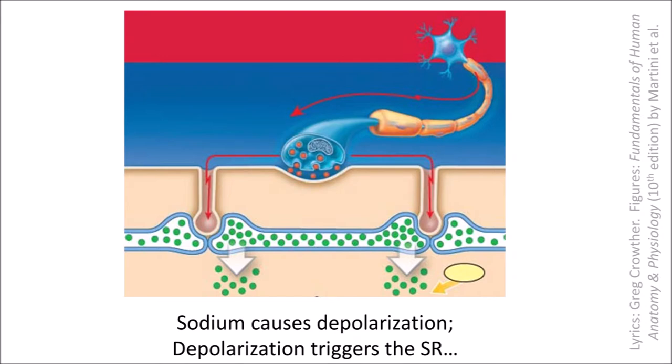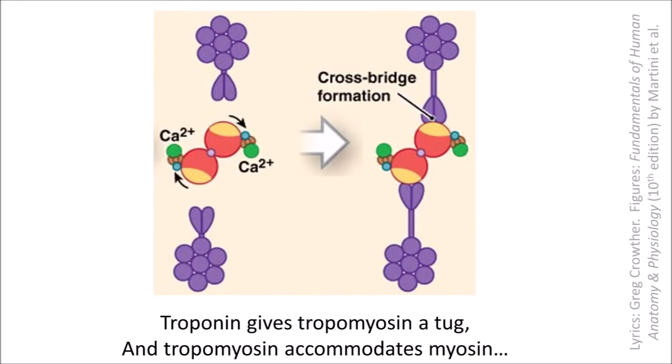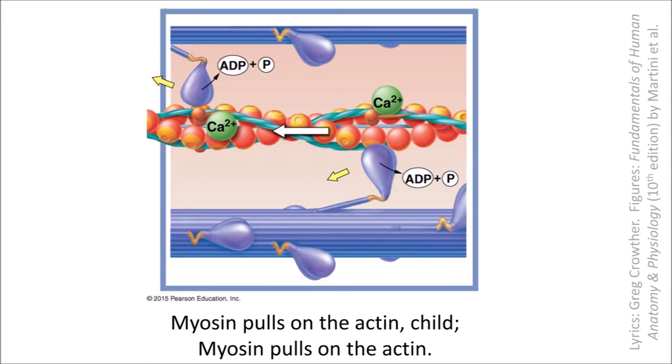Depolarization triggers the SR, and the SR releases calcium ions. The calcium ions bind to troponin. Troponin gives tropomyosin a tug, and tropomyosin accommodates myosin.